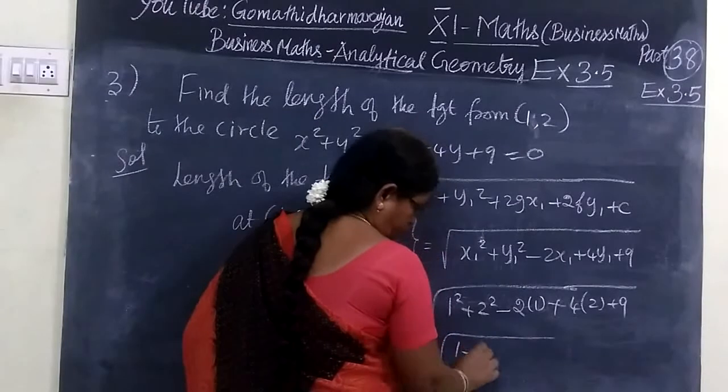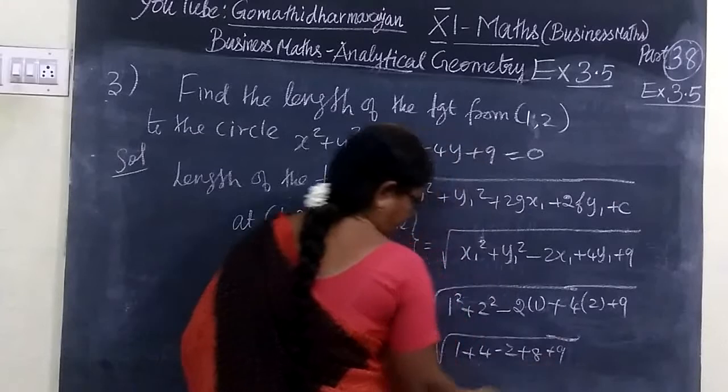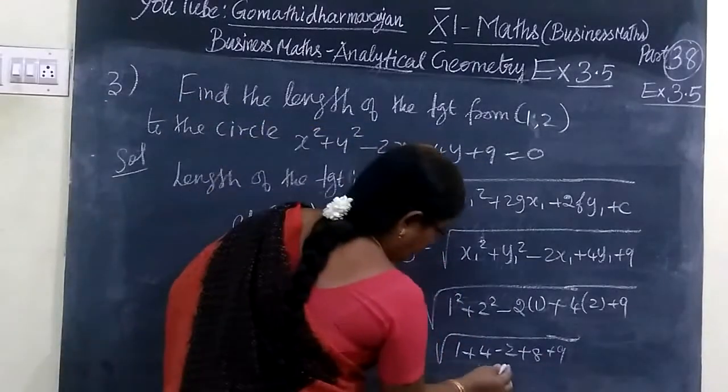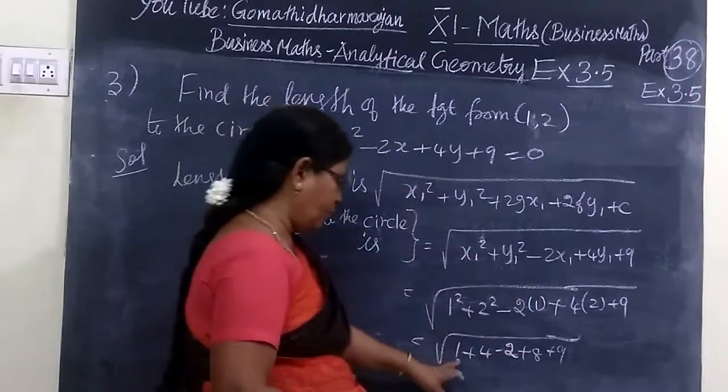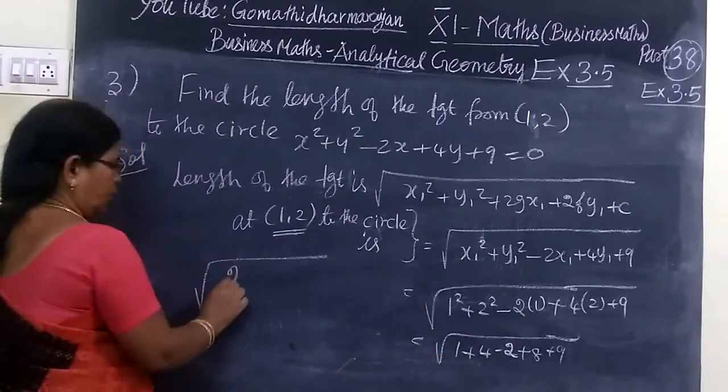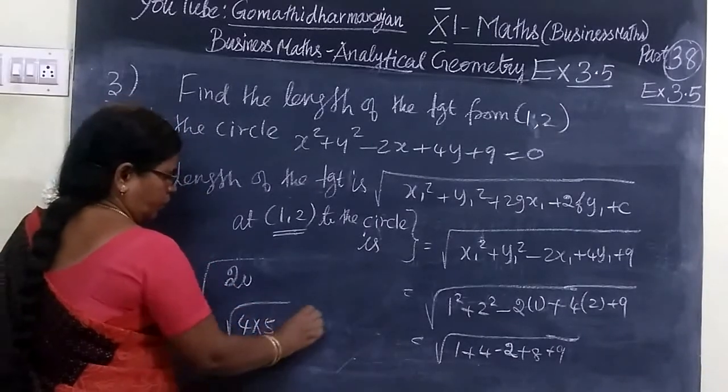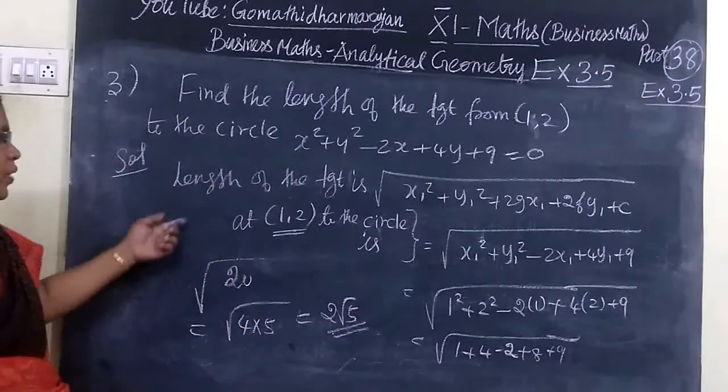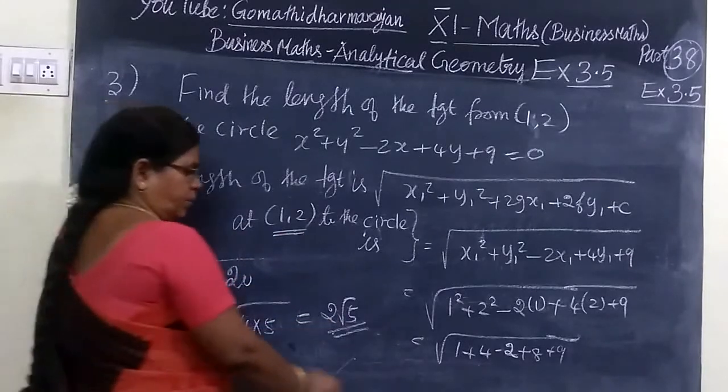This is 1 plus 4 minus 2 plus 8 plus 9, which equals root of 20. Root of 20 is root of 4 into 5, which equals 2 root 5. Therefore, the length of the tangent at (1,2) is 2 root 5 units.